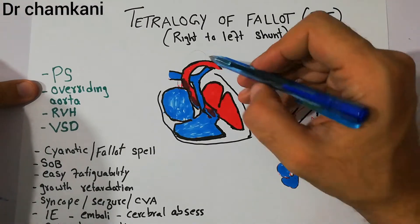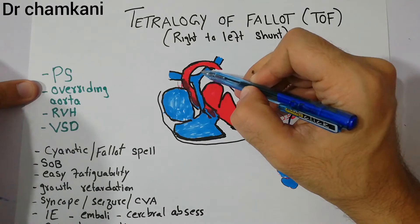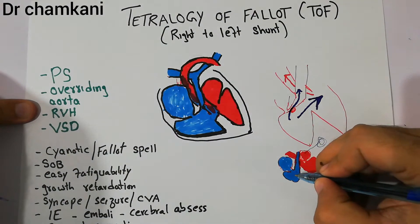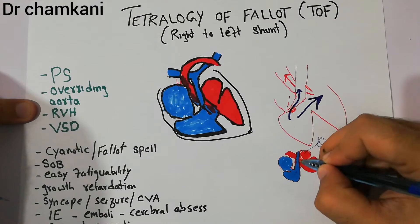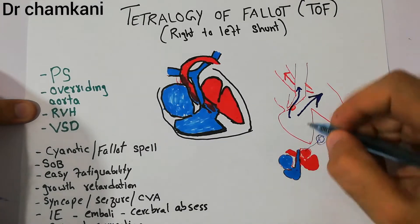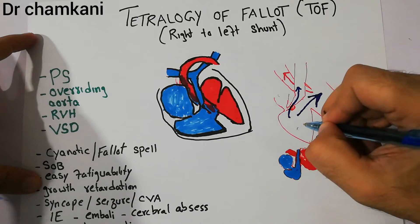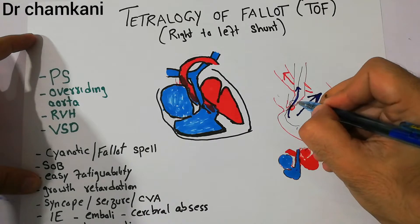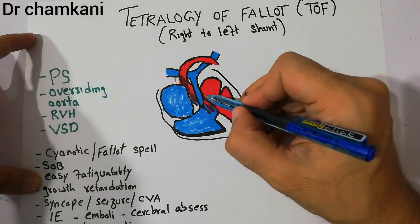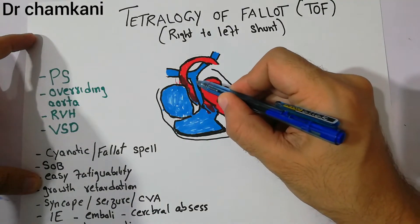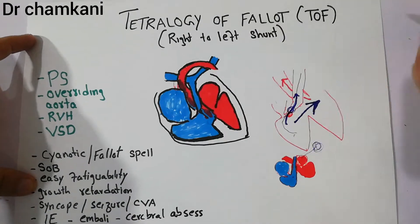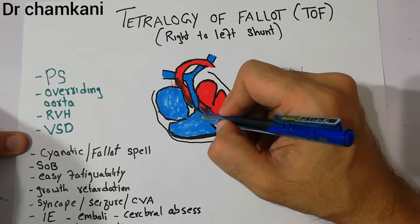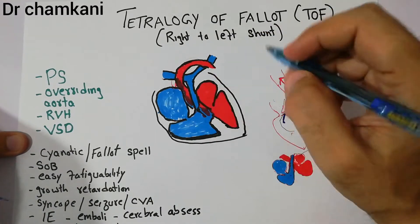In patent ductus arteriosus there was a connection between the aorta and pulmonary artery. But in Tetralogy of Fallot, there is pulmonary stenosis — that is the first problem. The pulmonary artery, which takes blood from the right ventricle into the lungs, is stenosed. The point at which blood enters the pulmonary artery is narrowed, making it very difficult for blood to pass through. The pressure against which blood must move into the pulmonary artery is very high.